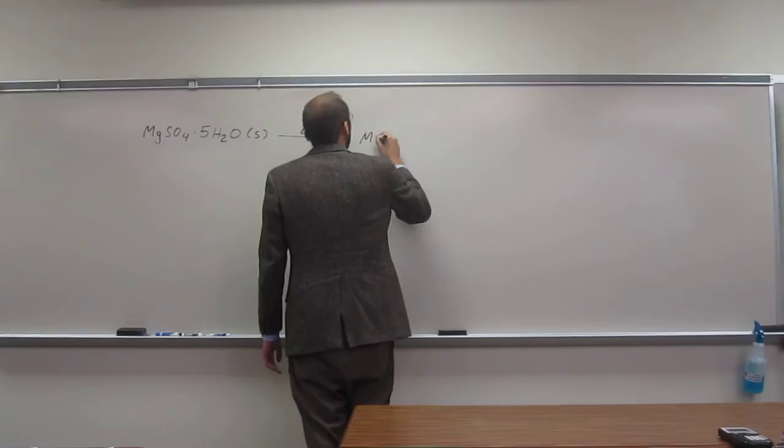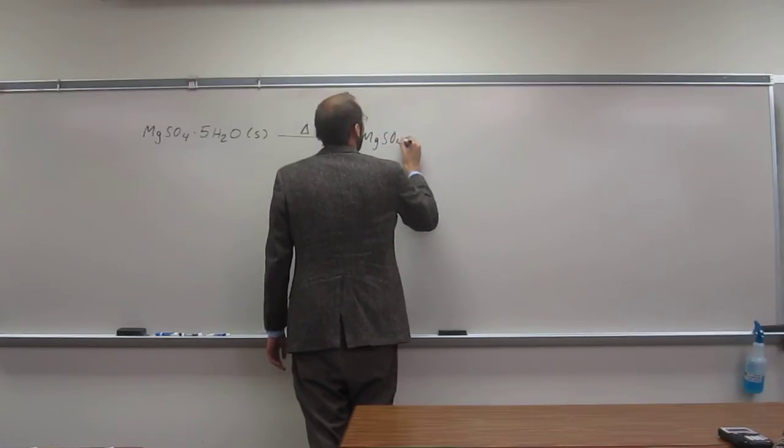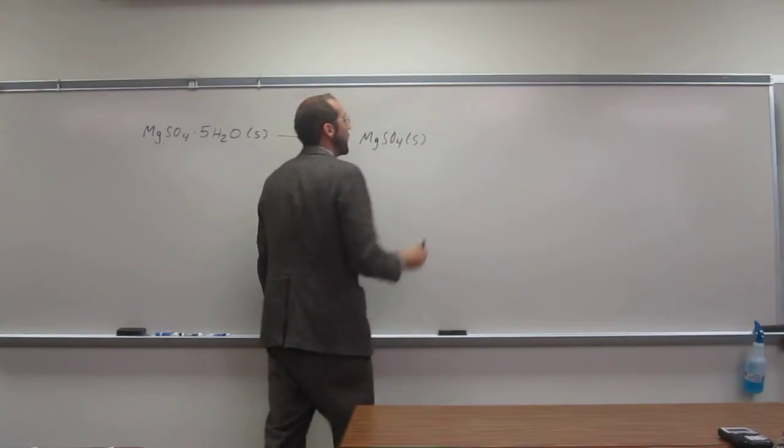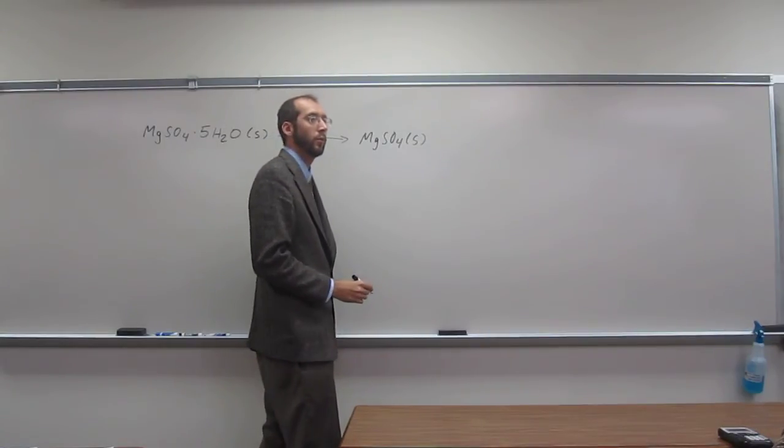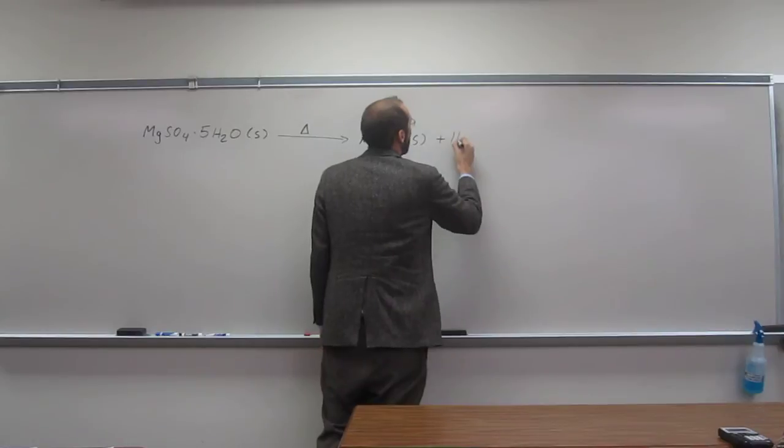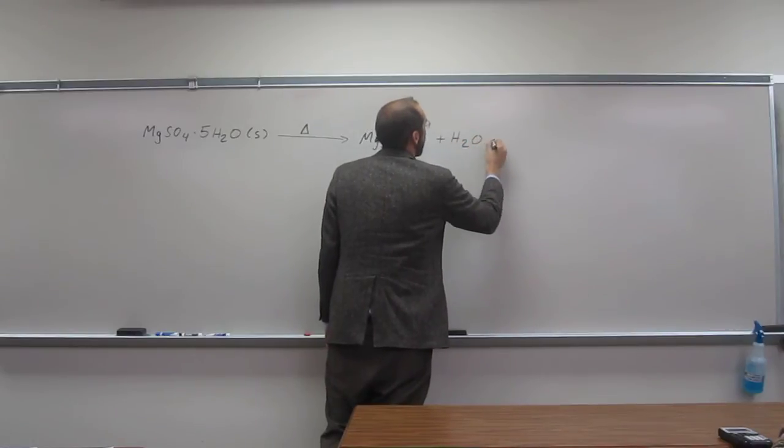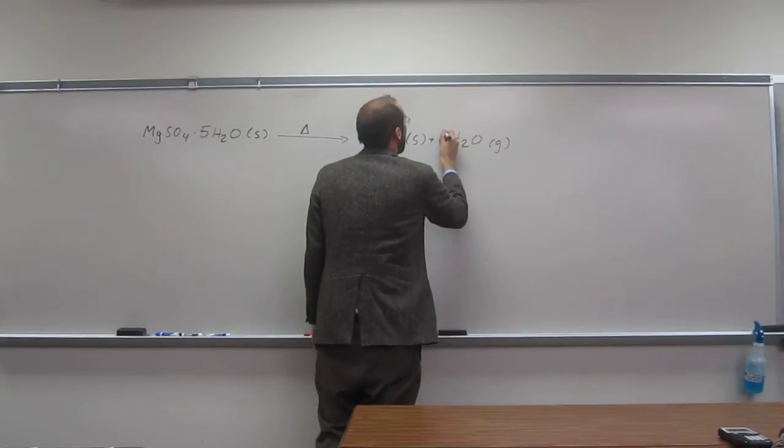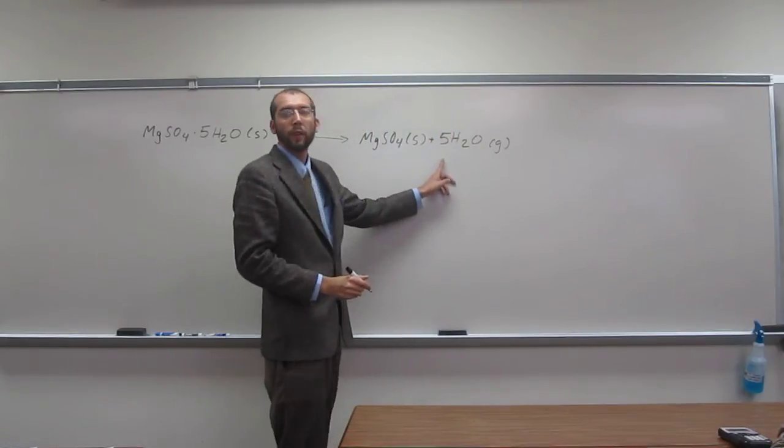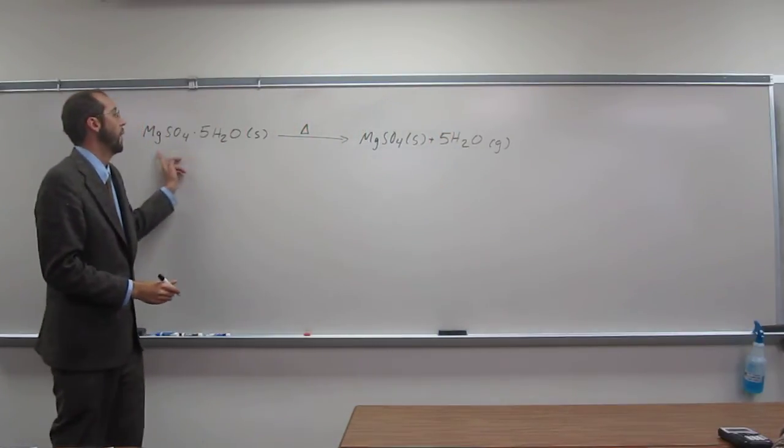So we have the magnesium sulfate portion left as a residue in our beaker, but we also have to account in the chemical equation for the water that was lost as a gas. And of course, there were five of those for every one of these.